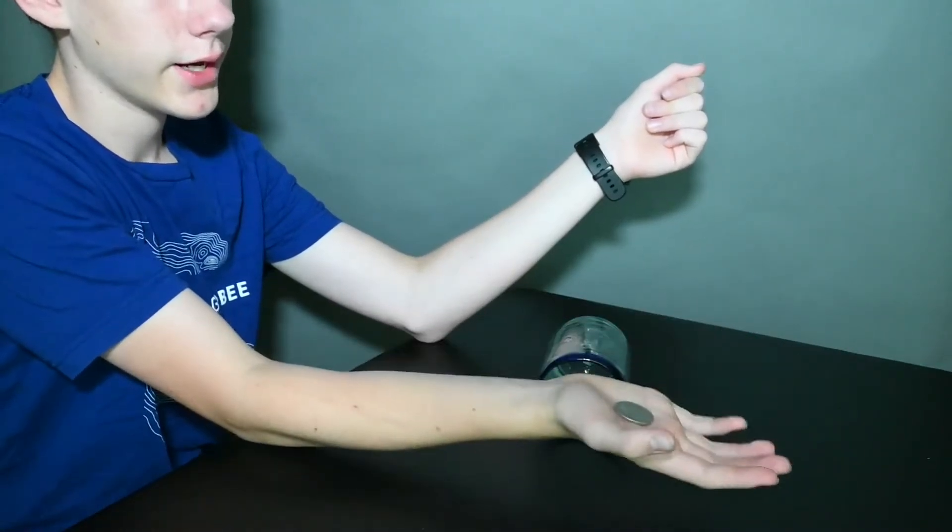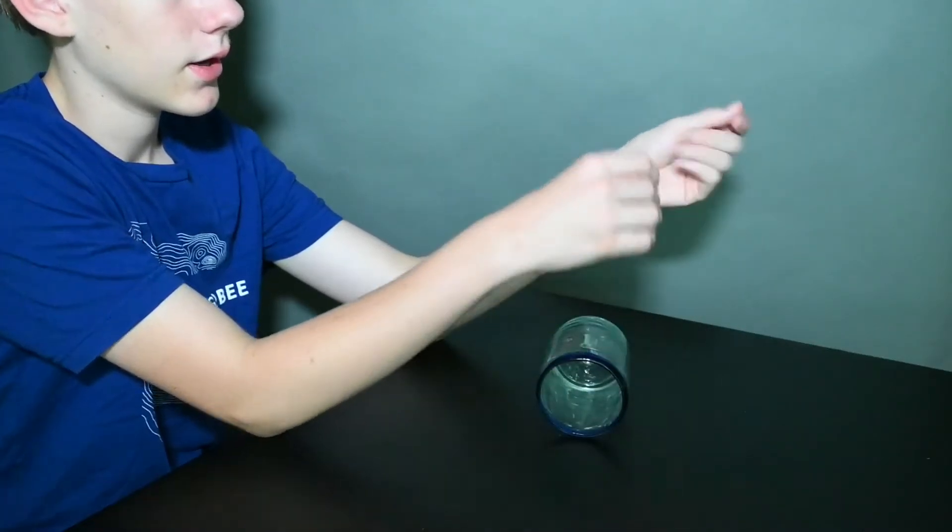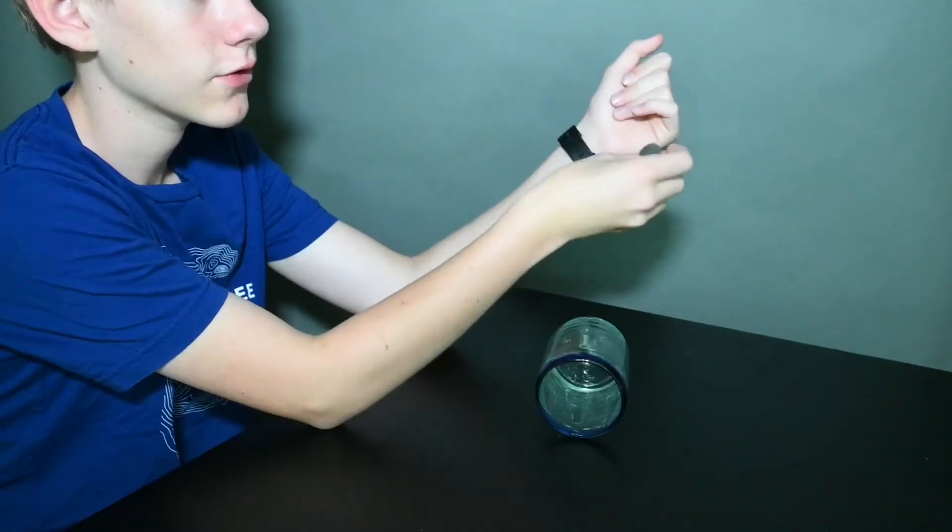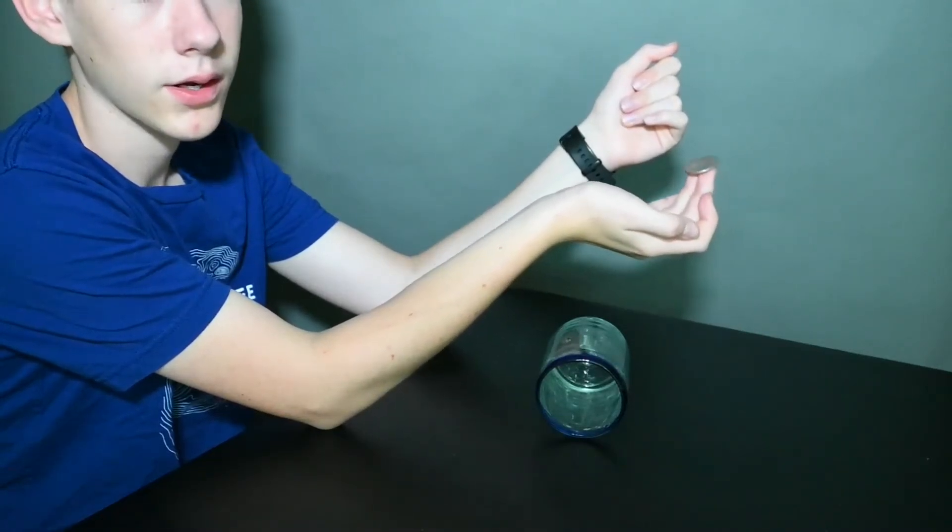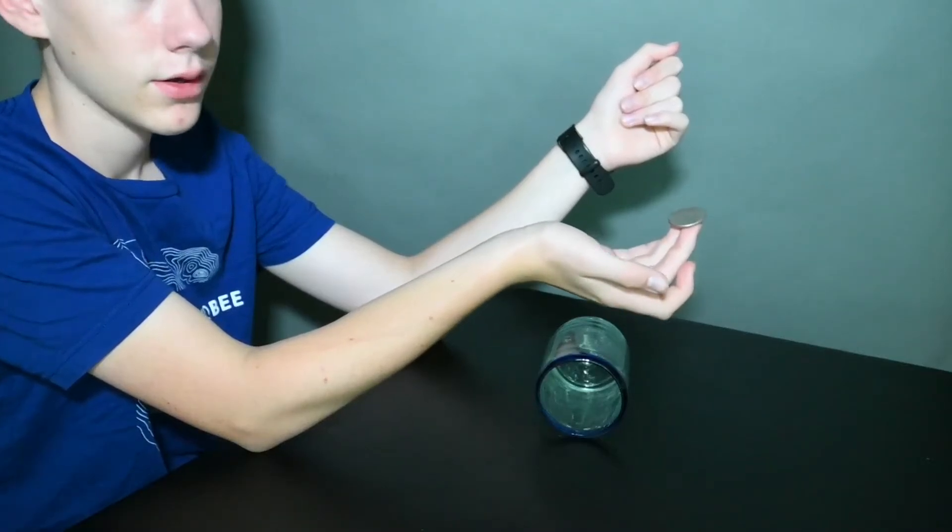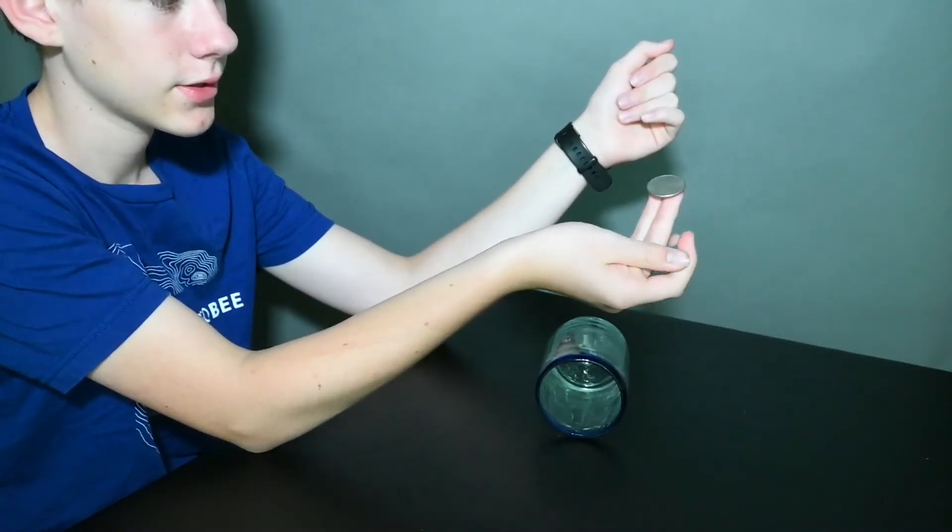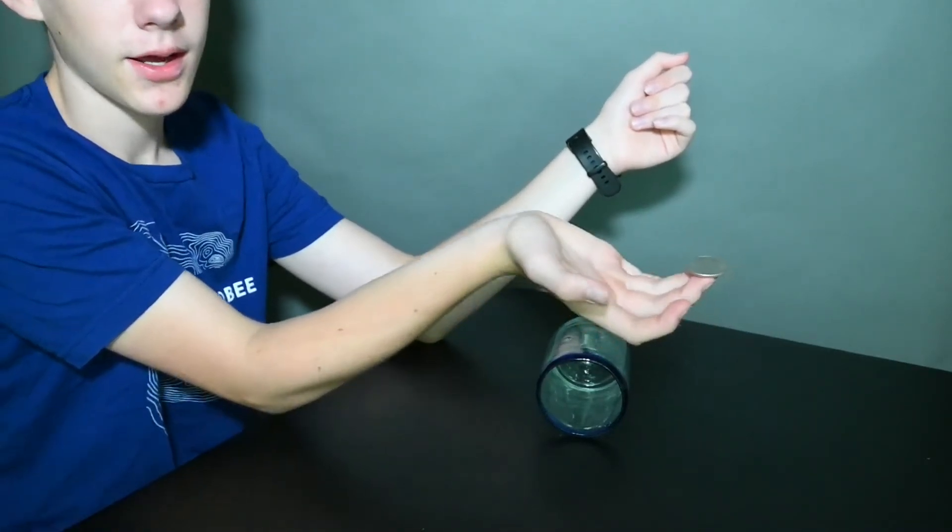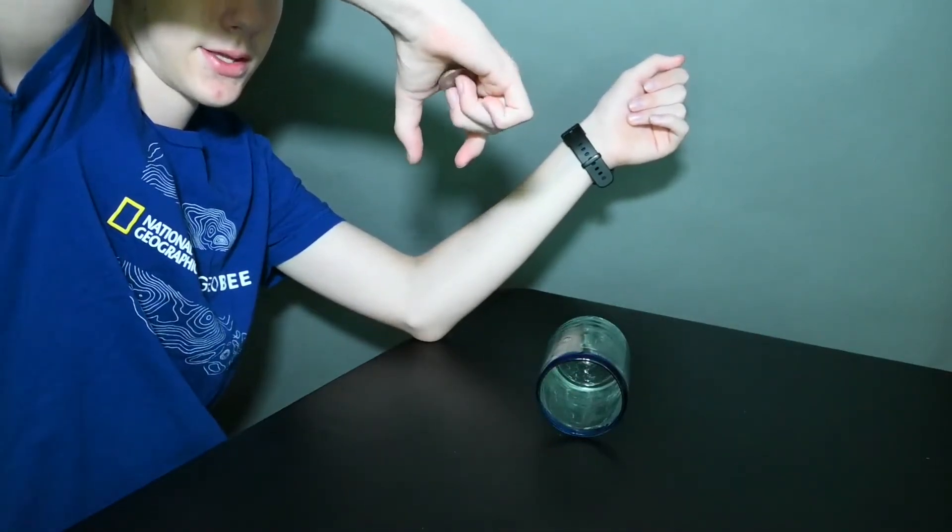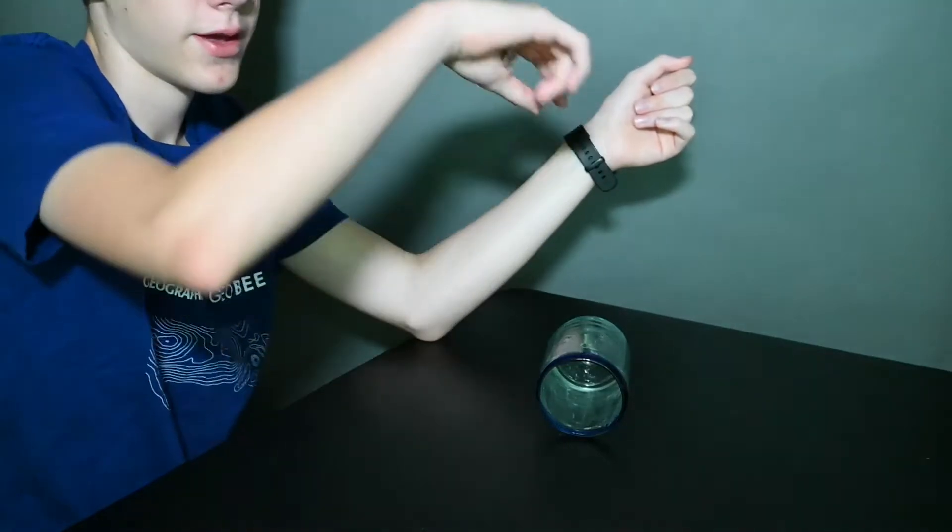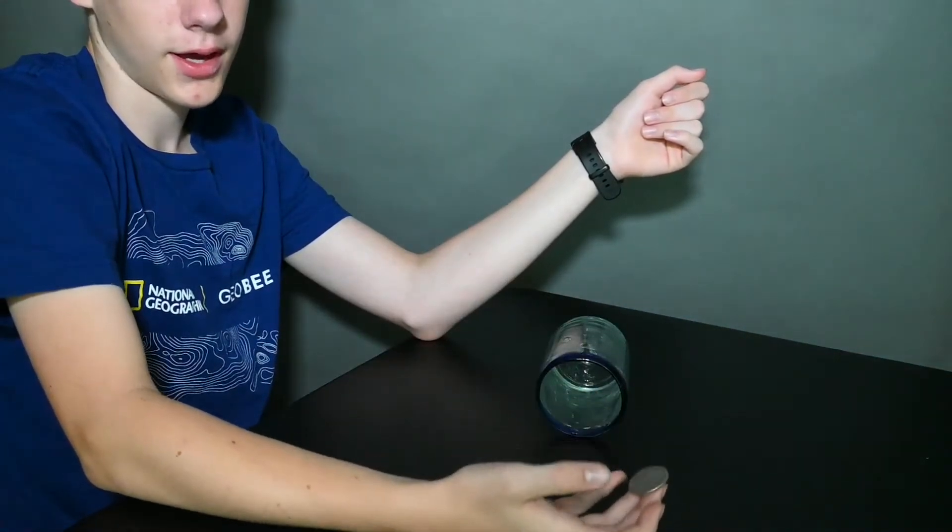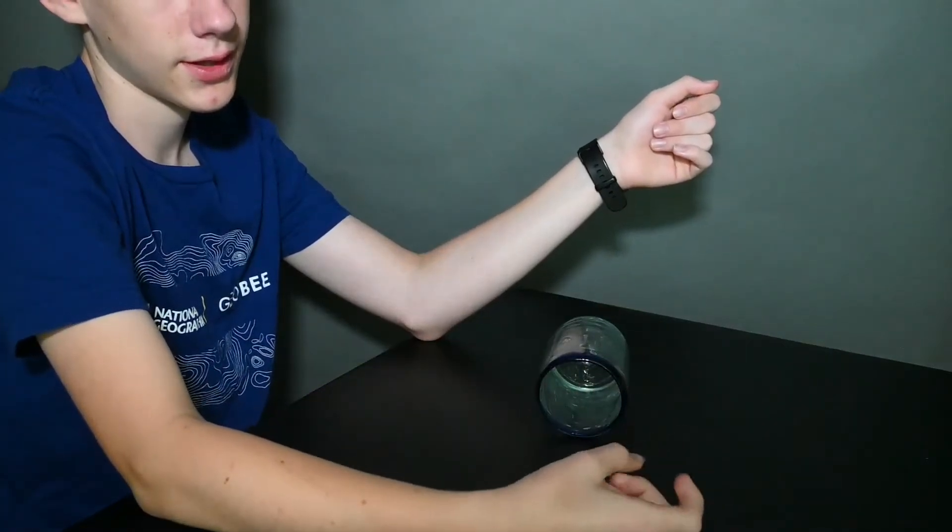And whenever I do my false transfer, the coin automatically rests on your middle and ring finger. So as you might have guessed, that is a perfect setup, so you can load the muscle pass just like that. Alright, and as you're taking your hand down in front of the cup, you're going to be loading it just like that.